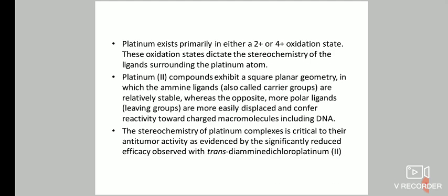Platinum exists primarily in either a 2+ or a 4+ oxidation state, and these oxidation states dictate the stereochemistry of the ligands surrounding the platinum atom. Platinum compounds exhibit a square planar geometry in which the amine ligands, also called the carrier groups, are relatively stable, whereas the opposite, more polar ligands — the leaving groups, which are the chlorides — are more easily displaced and confer reactivity towards charged macromolecules including DNA.